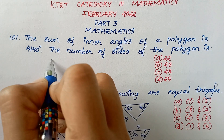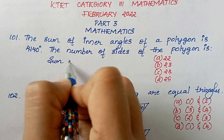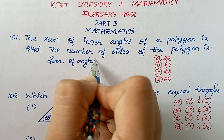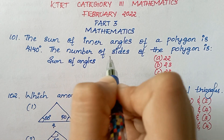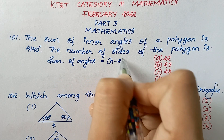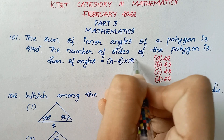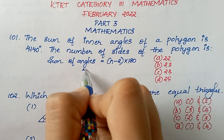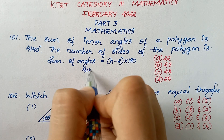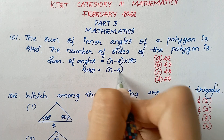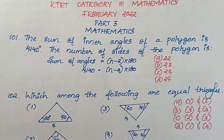The formula for the sum of angles of a polygon is (n-2) × 180. For this question, we substitute: 4140 = (n-2) × 180.